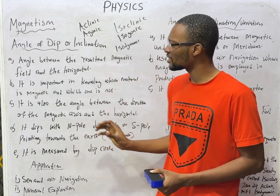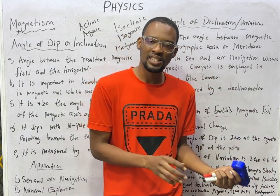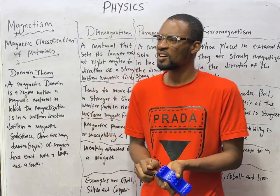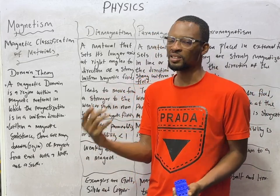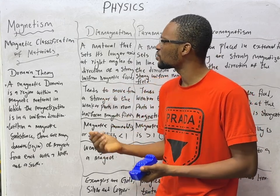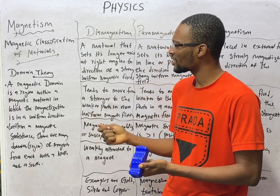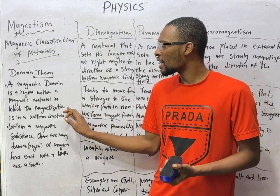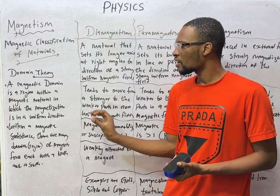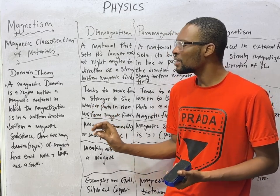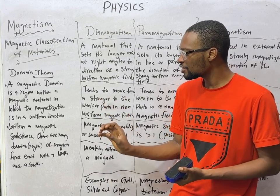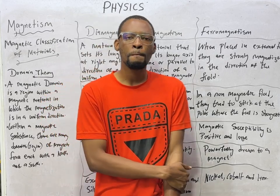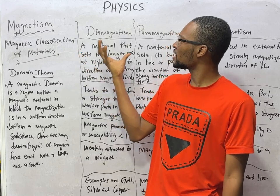There are very important properties of magnets and magnetic field to know: paramagnetism, diamagnetism, and ferromagnetism. There is also something called domain theory in magnetism. A magnetic domain is a region within a magnetic material in which magnetization is in a uniform direction. The domain theory states that within a magnetic material there are many domains or regions of magnetic force, each with a north and a south.